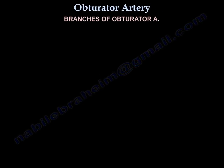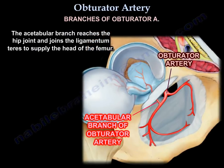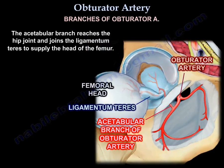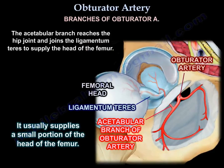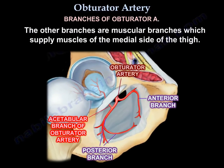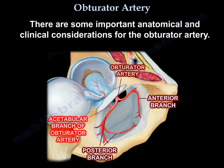Branches of the obturator artery include an acetabular branch, which reaches the hip joint and joins the ligamentum teres to supply the head of the femur — usually a small portion of the head of the femur. The other branches are muscular branches which supply muscles of the medial side of the thigh. There are some important anatomical and clinical considerations for the obturator artery.